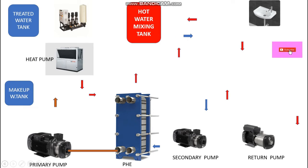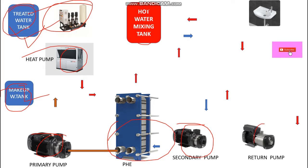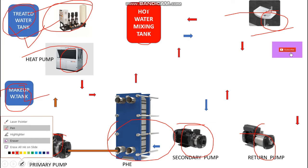Now let's come to the working — basically how this system works. Here I have the major components which we already discussed. This is the treated water tank, this is a hydropneumatic tank, this is the hot water mixing tank, this is the heat pump makeup water tank, and this is the primary PHE and secondary pump, the return pump, and the plumbing fixture wash basin.